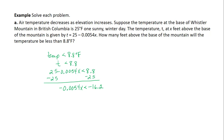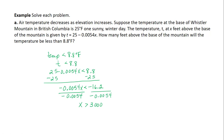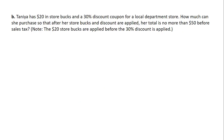Now we can divide each side by the coefficient of x, negative 0.0054. This gives us x is greater than 3,000. Remember that when we divide by a negative number, we must reverse the inequality symbol. Therefore, the temperature is less than 8.8 degrees Fahrenheit when we are at 3,000 feet or more above the base of the mountain.